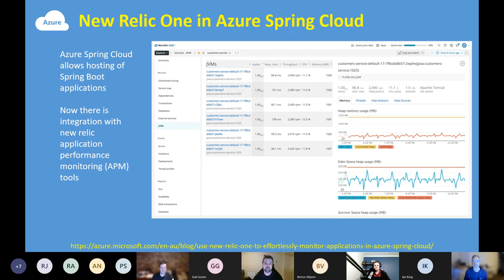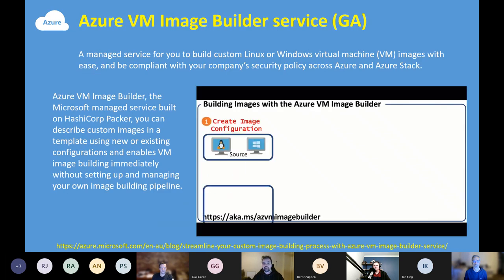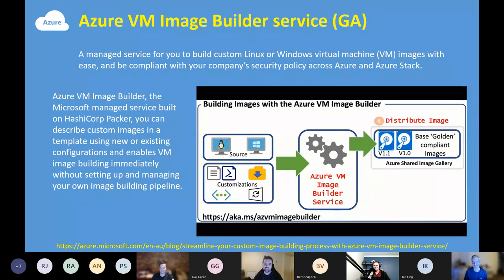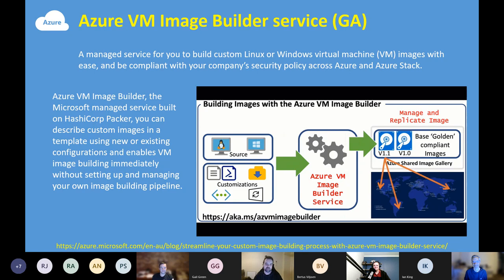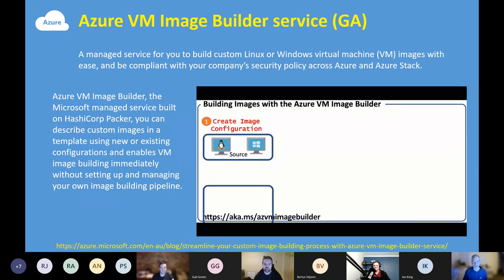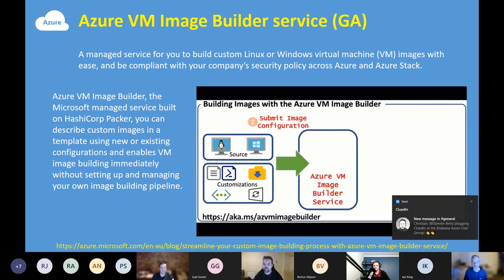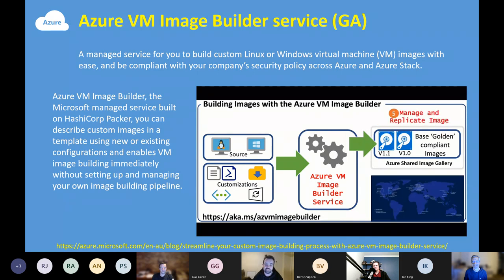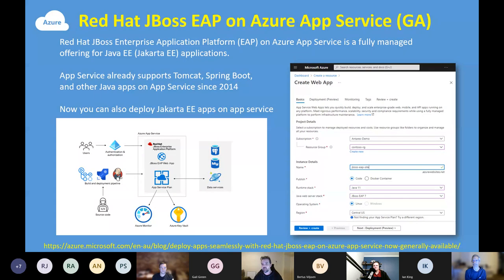Azure Image Builder — we'll get a sneak preview of this tonight. It makes it easier to put together VMs and is built on HashiCorp Packer. Also, JBoss EAP has just gone GA — Red Hat JBoss Enterprise Application Platform is now fully supported, making it a fantastic option for Java developers on App Service.